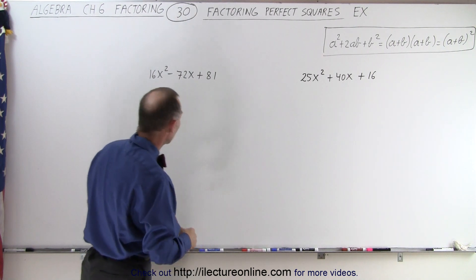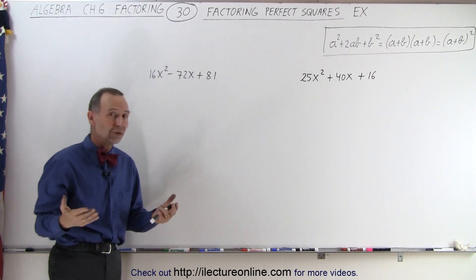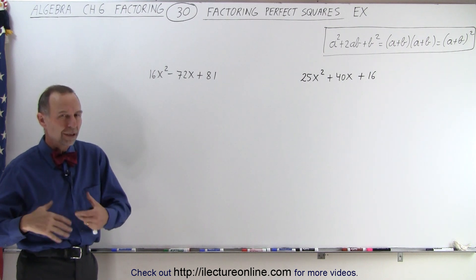We can factor as such. Same over here. 16 is 4 squared and 81 is 9 squared. So again, there's a possibility that that may be a trinomial in disguise of a perfect square.